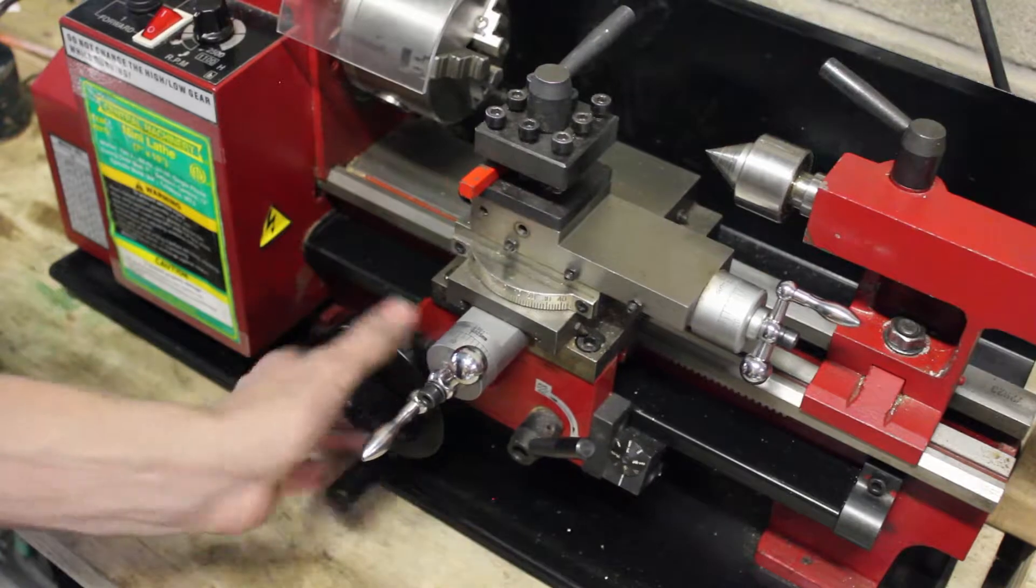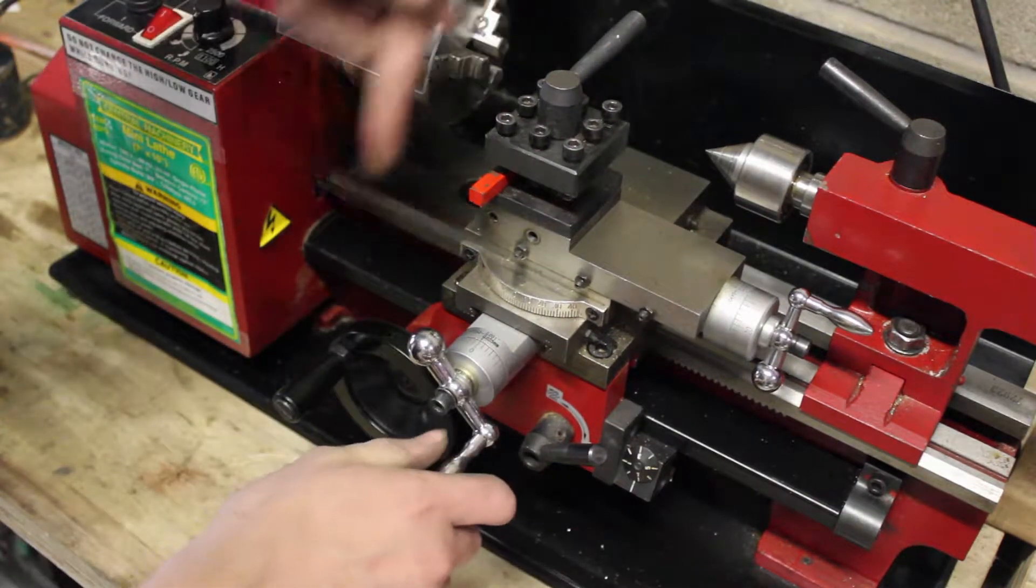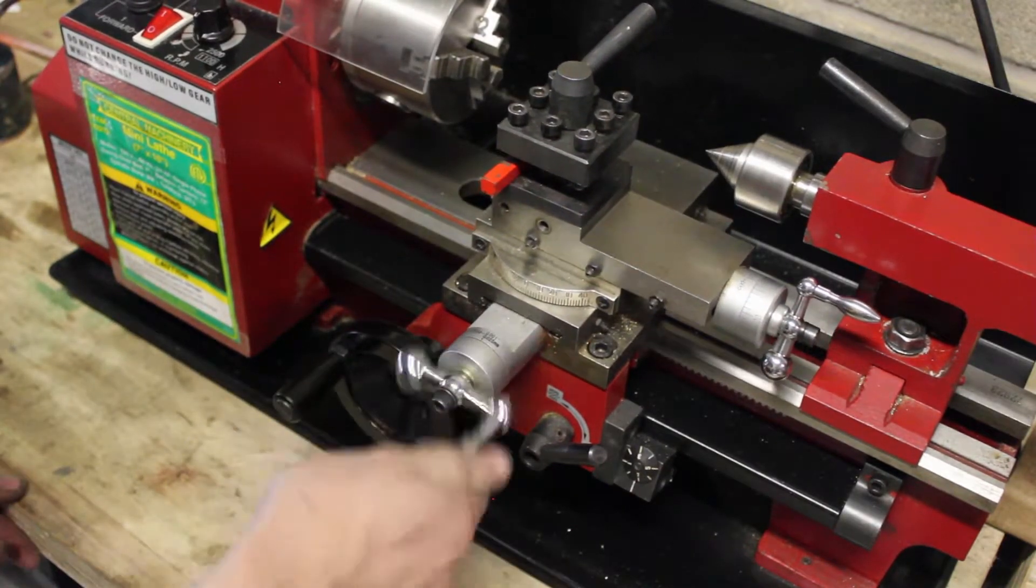So you can move it this way and then this knob will move it along this axis. This would be the X axis in lathing.